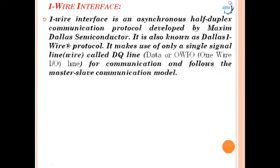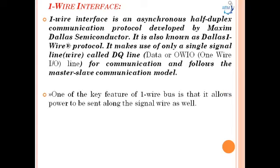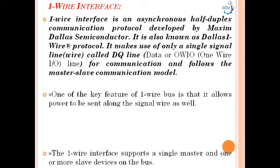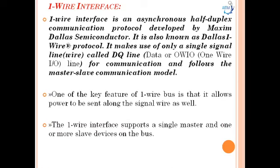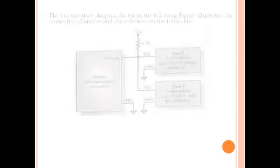The next onboard interface is the one-wire interface, an asynchronous, half-duplex communication protocol developed by Maxim (Dallas Semiconductor), also known as the Dallas one-wire protocol. It uses only a single signal line called the DQ line (data/one-wire I/O) for communication and follows the master-slave model. A key feature is that it allows power to be sent along the signal wire as well. It supports a single master and one or more slave devices on the bus.